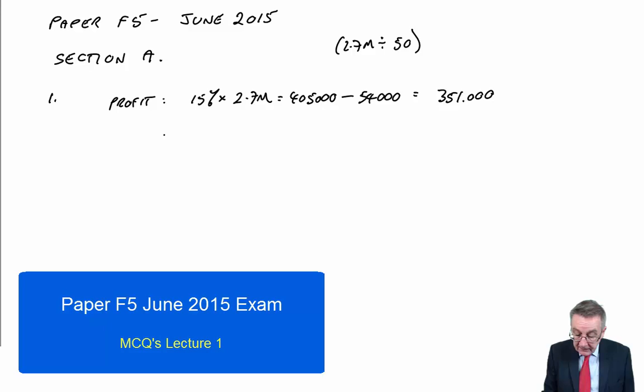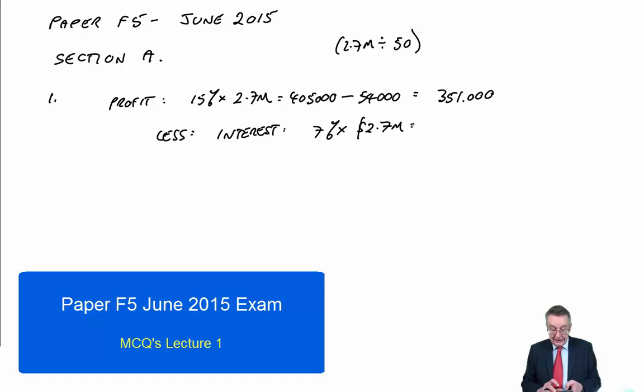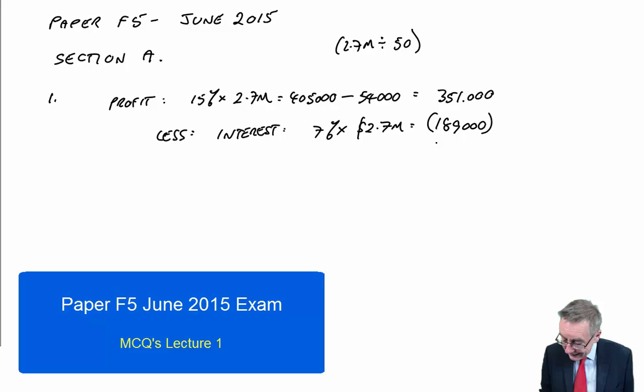We need the profit after depreciation. The cost was 2.7 million, useful life 50 years, so depreciation is 54,000. Giving a final profit of 351,000 per annum. For residual income, we subtract the notional interest. The interest is 7% of 2.7 million, which is 189,000.